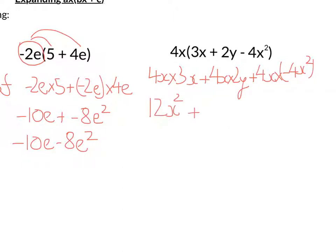The next bit, 4 times 2 is 8. x times y is xy. And the last one we've got, 4 times negative 4. Well, that is negative 16. x times x squared is x cubed. So there's your answer.